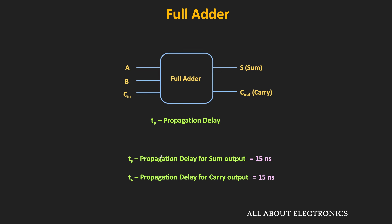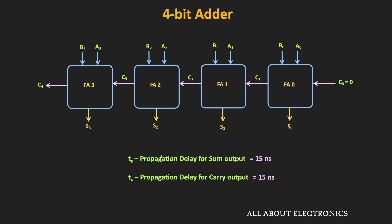Let's say the propagation delay to generate the sum output is Ts, and the propagation delay to generate the carry output is Tc. Assuming both are 15 nanoseconds, once we apply input to a full adder, the valid sum and carry bits are available after 15 ns. Although input bits to all full adders are applied simultaneously, the availability of each valid carry input depends on the previous stage.